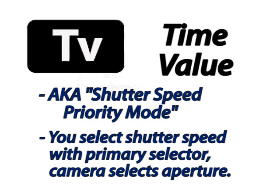The next mode you see is TV. TV stands for time value, which is shutter priority mode. And this is unique and different — it's different than the sports mode because it allows you to dial in slow shutter speeds as well as fast shutter speeds. In TV mode, or shutter priority mode, the camera wants you to tell it how fast you want the shutter speed to be.